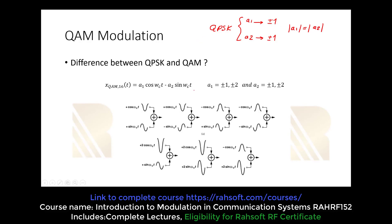The new thing in QAM is that this time we are also changing the amplitude. In QAM, a1 is going to have two levels: plus and minus 1, and plus and minus 2. The same applies to a2. So we are going to see this at the output — this is our I part and this is our Q part.